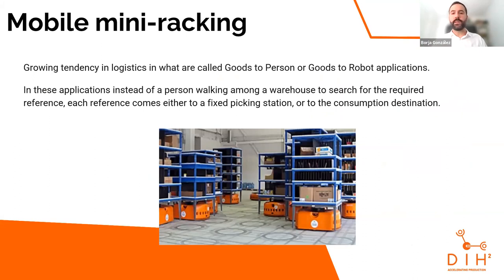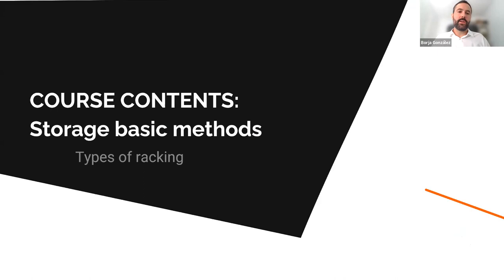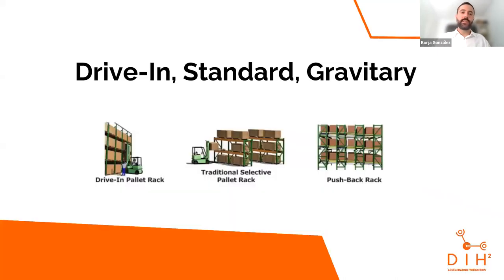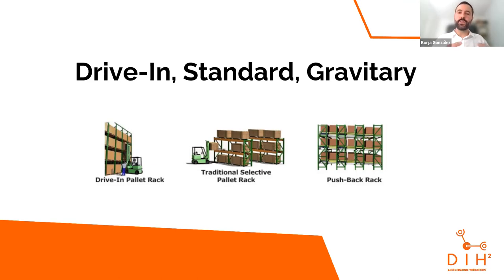Then we jump into more complex technologies like mobile mini racking — for goods-to-person or goods-to-robot applications. This gets into questions of how much throughput you need and how much efficiency is right for you. For basic storage methods, in intralogistics we have three main standard racking systems: driving, standard, and gravity. The course discusses the pros and cons of each, coming down to your warehouse size, whether you use first-in-first-out, and other factors important for making the best choice.